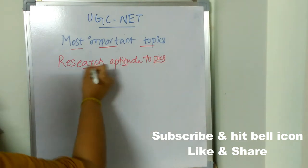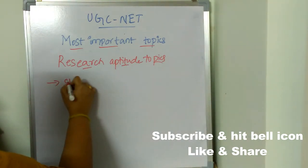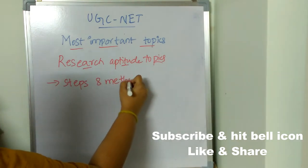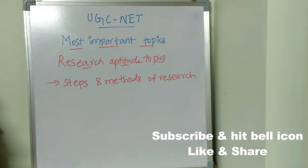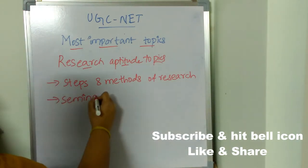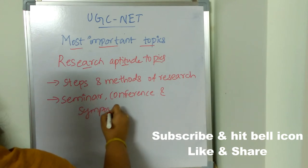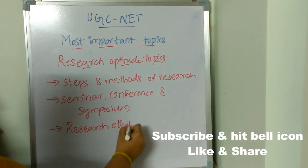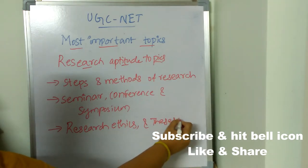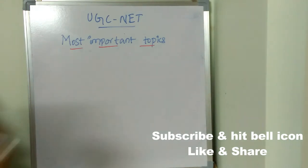Coming to research aptitude topics: steps and methods of research — very very important. Also important are seminar, conference, and symposium. Research ethics is very very important, as well as thesis writing. These are the most important topics coming to research aptitude.